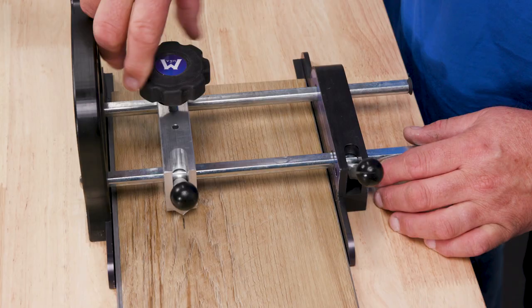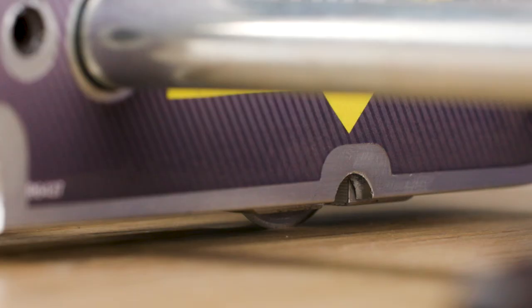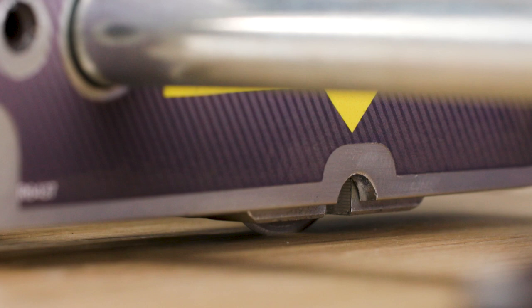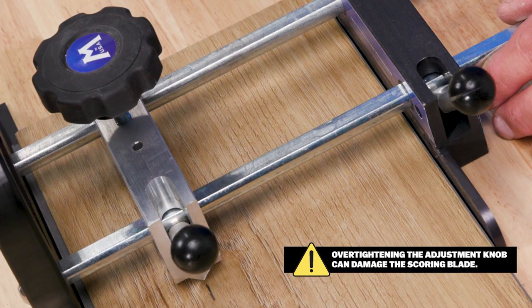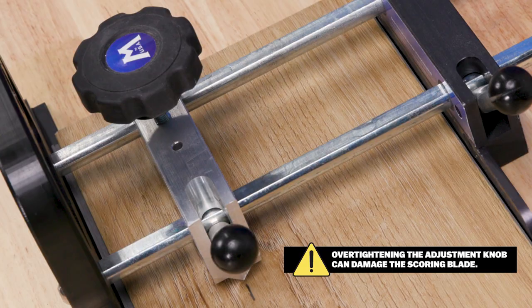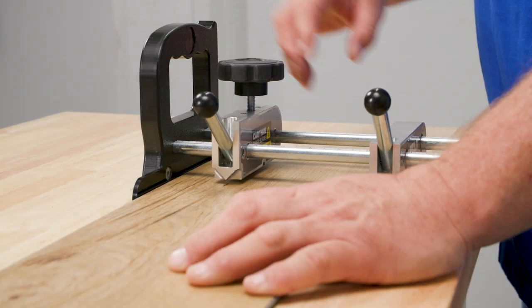Adjust the scoring blade until it just touches the surface of the flooring. Then rotate the knob clockwise about a half turn to one full turn so the scoring blade will score the surface. Don't over adjust the knob as it can damage the scoring blade.